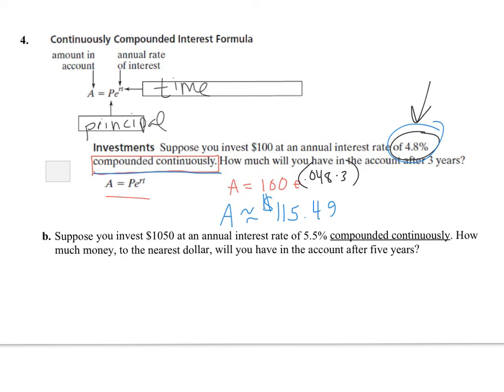So again, we have the next one, compounded continuously. So I'm going to do A equals Pe^rt. Suppose you invest 1050, so you're taking 1050, times e to the 0.055, times time 5. So put it in your calculator, 1050 times e, and then the e automatically puts an exponent in your calculator. And then I'm going to put 0.055 times 5. Close the parentheses. So this is about $1,382.36.